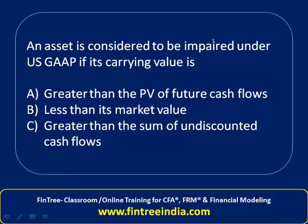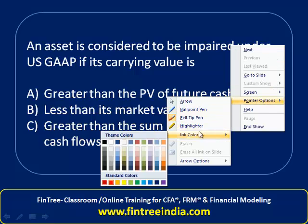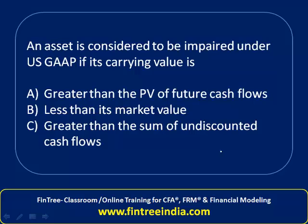An asset is considered to be impaired under US GAAP if its carrying value is greater than the sum of undiscounted cash flows. Under US GAAP, the impairment calculation is done using two separate steps. In step one, we compare the carrying value — which is the book value — versus the total of undiscounted cash flows. Undiscounted means not considering the time value of money.